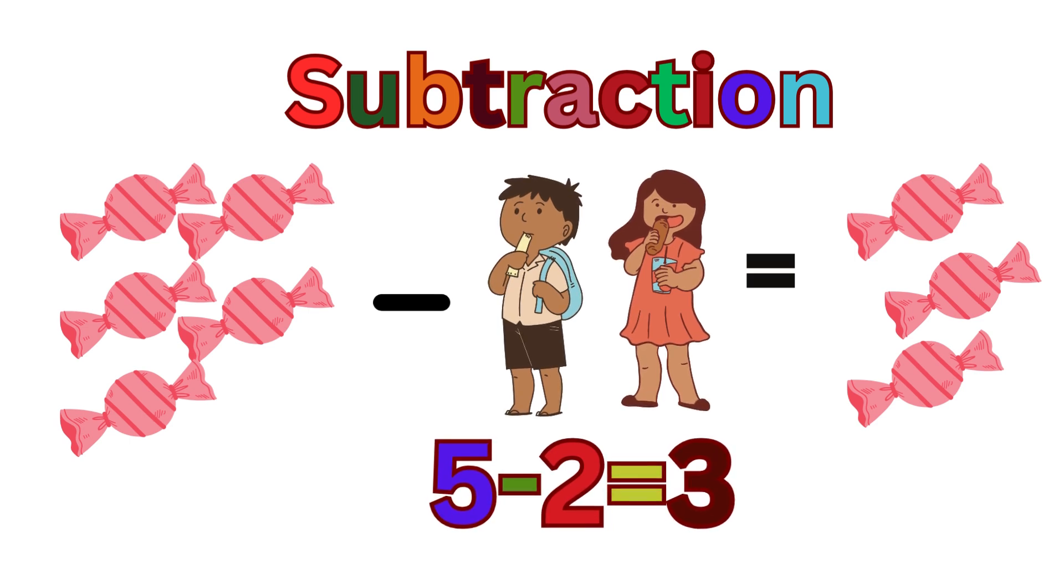If you have five candies and you eat two, you have three left. 5 minus 2 equals 3.